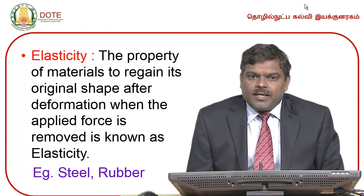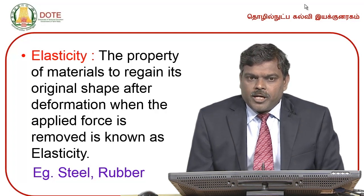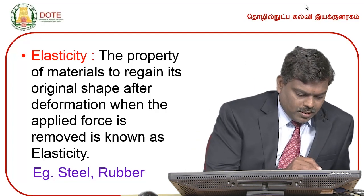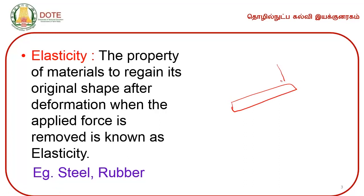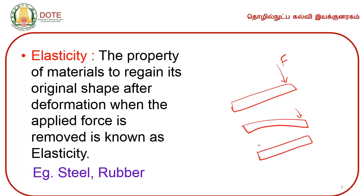Elasticity is the property of materials to regain its original shape after deformation when the applied force is removed. For example, if we take an object and apply a load force, there will be some deformation. But when the force is removed, the object regains its original position. The starting position and the position after removal of force are the same. This property is known as elasticity.